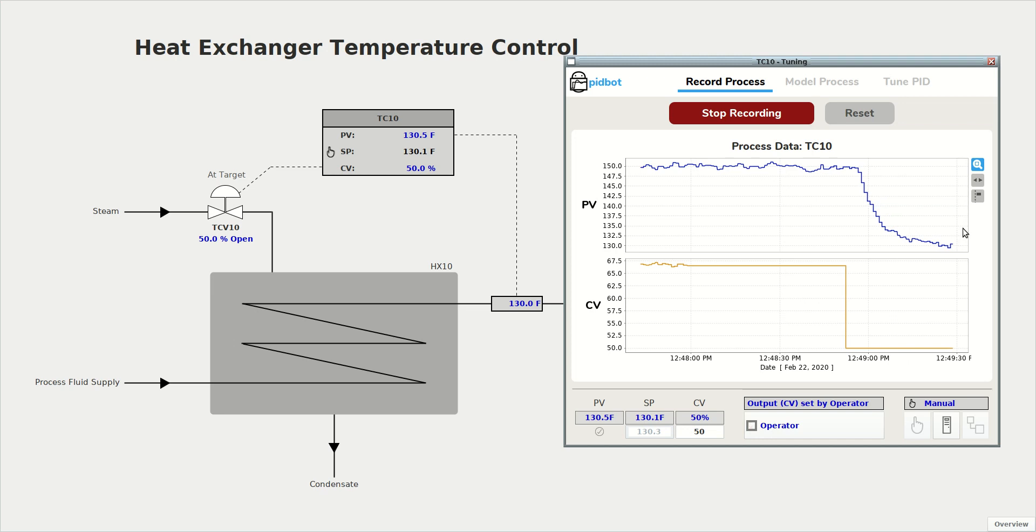And it's also a good idea to bump the process again and in the other direction in case it behaves a little bit differently on the way up. I'll go to 85% on the valve.